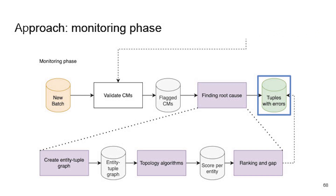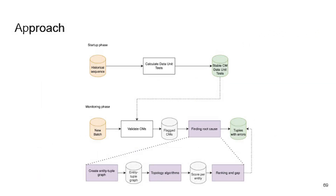To summarize the two phases: in the startup phase, we calculate the stable data unit tests. In the monitoring phase, we validate all conditional metrics, find the root cause by generating the entity-tuple graph, run our correlation density measure, and finally apply the ranking and gap method.